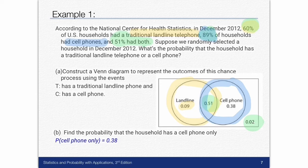That's part A. Part B says find the probability that the household has a cell phone only. So I look at my cell phone circle and I want cell phone only so I do not want this overlap of cell phone and landline. I just want the cell phone one only. That's where I get the 0.38 that I have in my answer. So Venn diagrams are extremely helpful. You just got to be real careful when you create them.